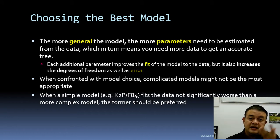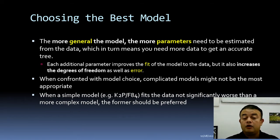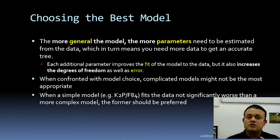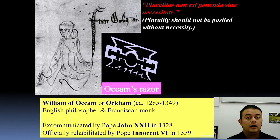There is a concept in philosophy called Occam's Razor. In Occam's Razor, the idea is that if a simple model like K2P or Felsenstein 84 fits the data not significantly worse than a more complex model, then the former should be preferred. The question is: is the difference statistically significant? There might be a slightly better fit in a very complicated model, but just because of a tiny improvement in fit, should you go with a really complicated model that substantially increases the error rate?